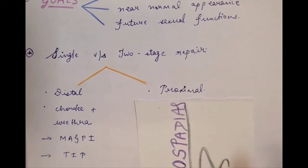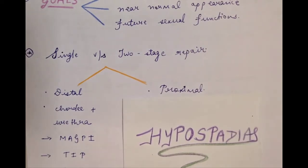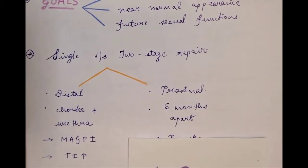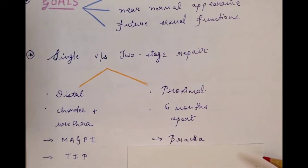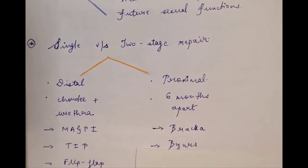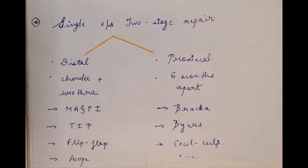The two-stage repair is used for proximal cases of hypospadias where the urethral opening is much more proximal, the deficiency of the urethra is much greater, tissue availability is very less, and therefore in this case you have to repair the chordee in the first stage and then only in the second stage go for urethroplasty. The popular ones are done six months apart — for example, the Braca two-stage repair, the Byars two-stage repair, and for extreme cases and hypospadias cripples, the Cecil-Culp technique. The Asopa Indian technique can usually be applied to both situations depending on how tissue reconstruction is done.